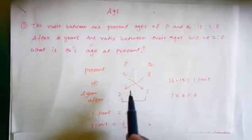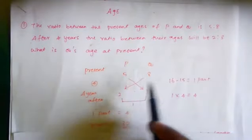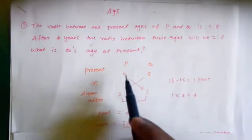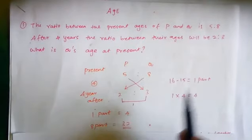Just cross multiply it and separate. 16 minus 15 equal to 1 part.